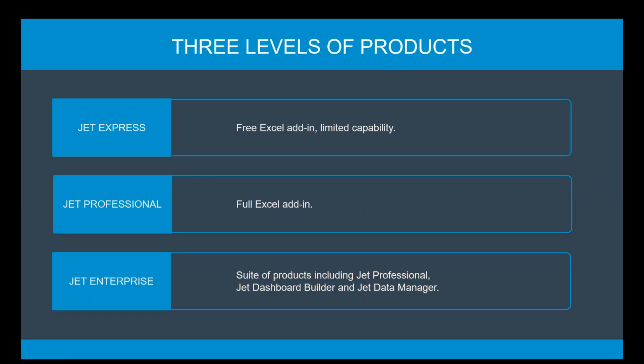Our three levels of product: we have Jet Express, we have Jet Professional, and we have Jet Enterprise. Jet Express is that free version — it's an Excel add-in with some limited capability, but it's great for financials like income statements and balance sheets, or building pivot tables. Once you want to get into more advanced reporting, that's where Jet Professional comes in — that's the full unlock version of our Excel add-in, and that's what a majority of people here are using.